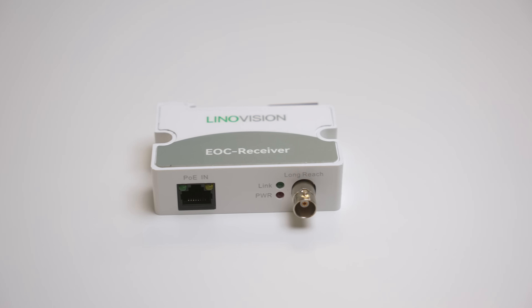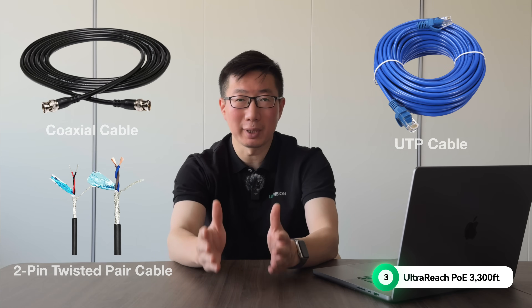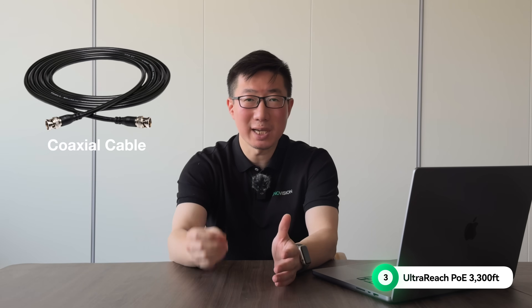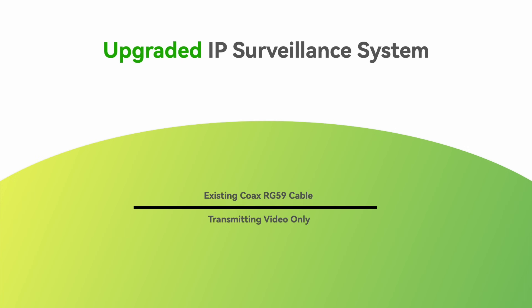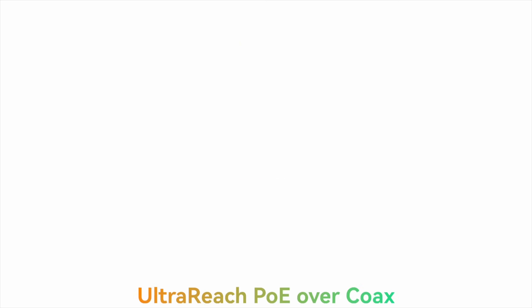Another remarkable feature of this technology is its ability to transmit POE power and data across various cable types, including coaxial cables, two-pin twisted-pair cables, and UTP network cables. A coaxial cable is commonly found in television and analog CCTV camera systems, consisting of a central conductor, an insulating layer, a shielding layer to reduce interference, and an outer protective jacket. Ultra-HPOE EVO coaxial technology is super useful for upgrading analog coaxial camera systems to IP surveillance systems without replacing coaxial cables, with a max transmission of 1000 meters.